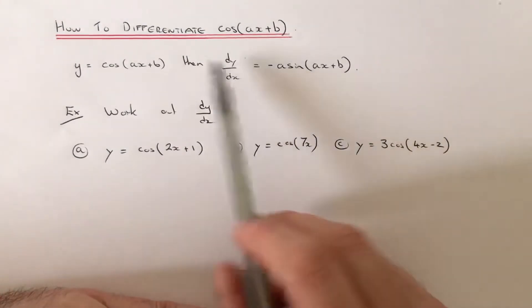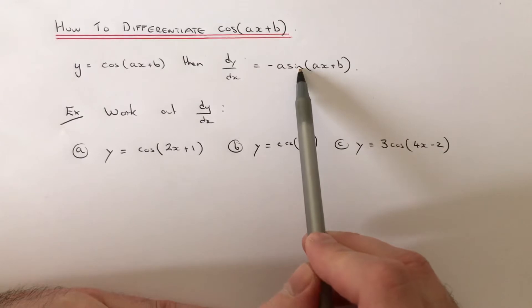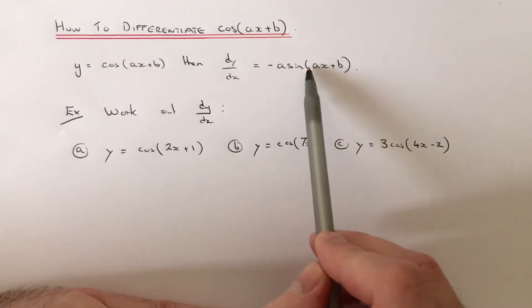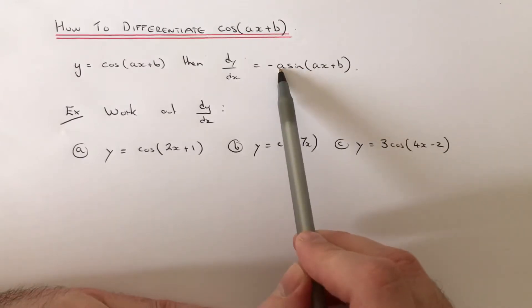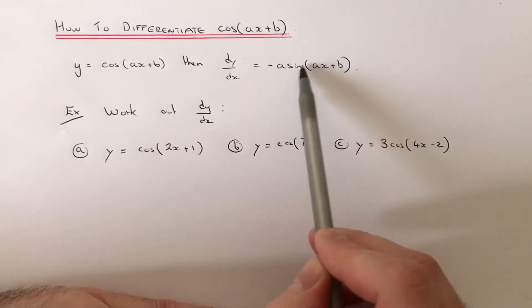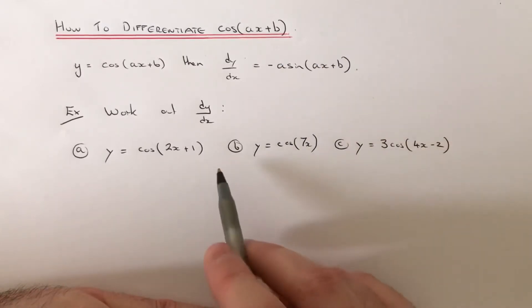To do this, change the cos to minus sine and multiply the front by the number before x, which is a, and then keep this bit the same after the sine.